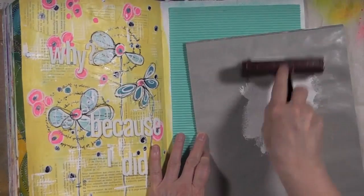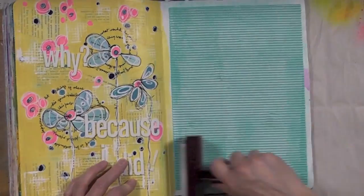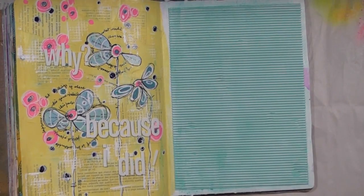My starting point was to glue a piece of corrugated cardstock to the page. I had it in my stash and I really wanted to challenge myself because it's not an easy surface to work with.